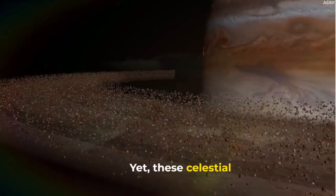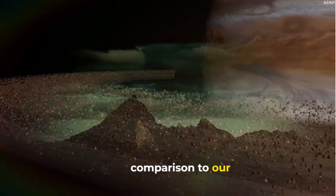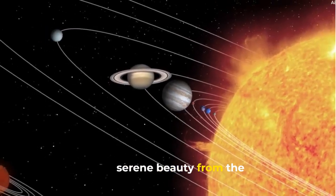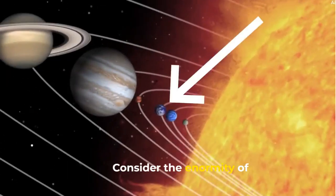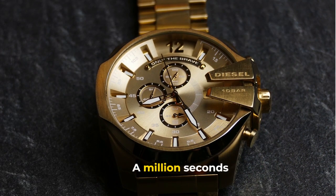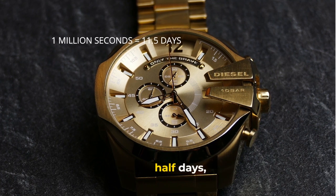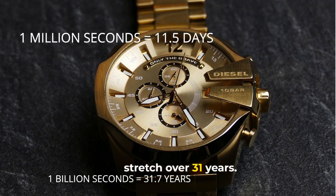Yet these celestial wonders pale in comparison to our radiant sun. Contemplate Earth's serene beauty from the lunar surface, and Mars' distant gaze. Consider the enormity of numbers. A million seconds fleeting in 11 and a half days, while a billion seconds stretch over 31 years.